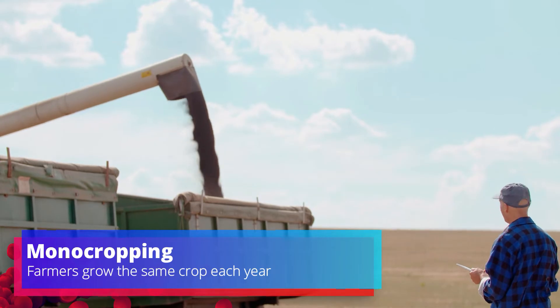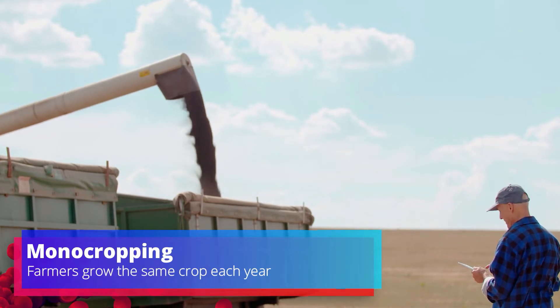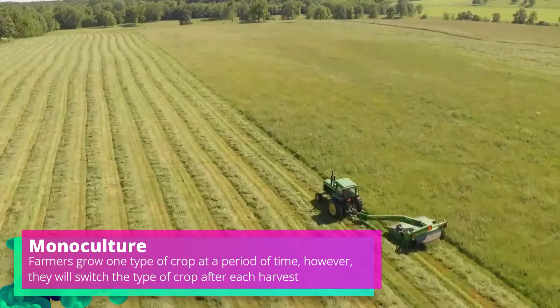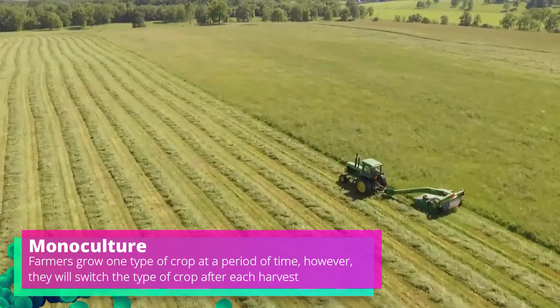And that's because of the possible profits they can get. When farmers specialize in a specific crop, they become more efficient at producing that crop, which allows them to make more money. Monoculture, on the other hand, is when farmers grow one type of crop at a period of time.